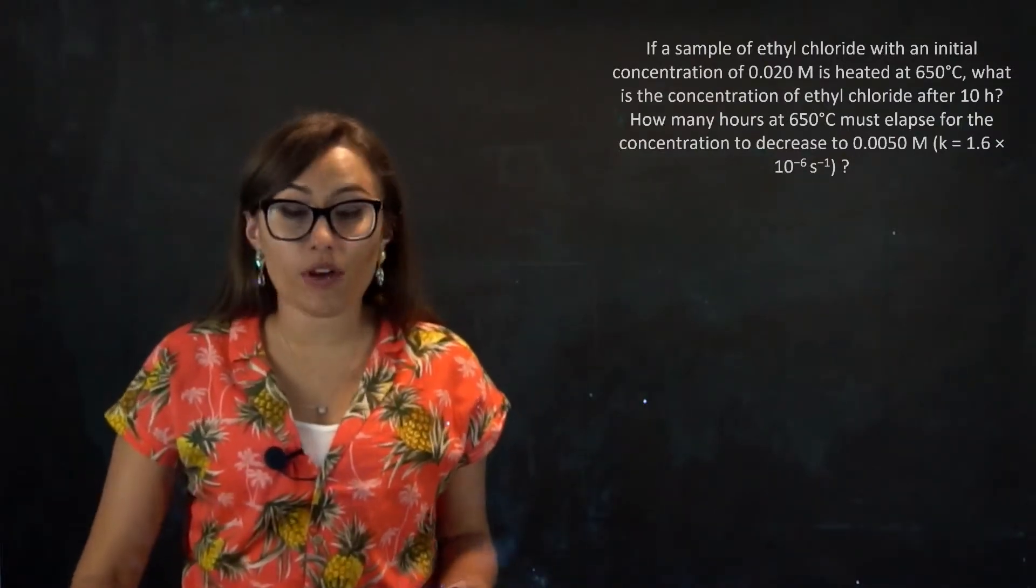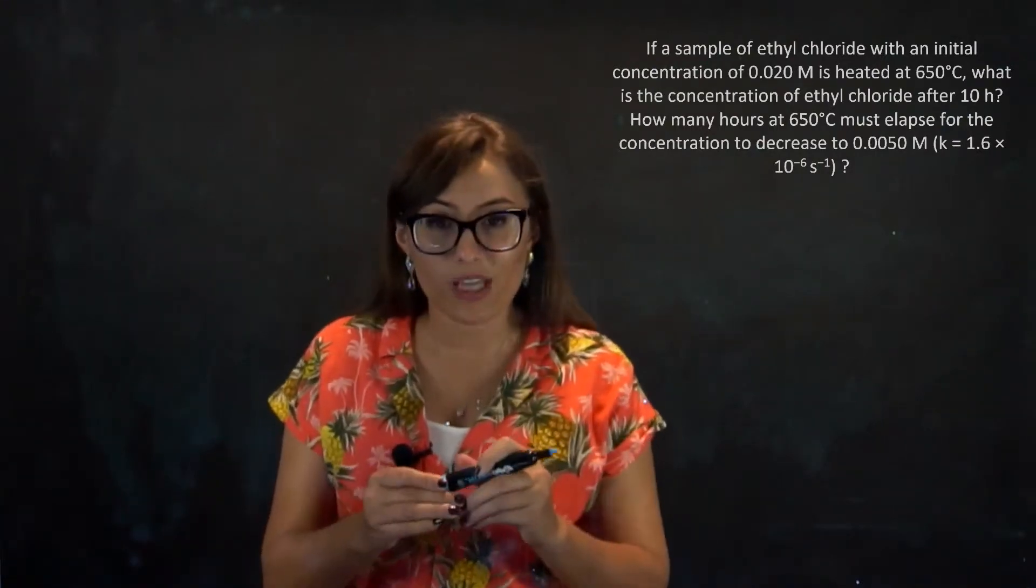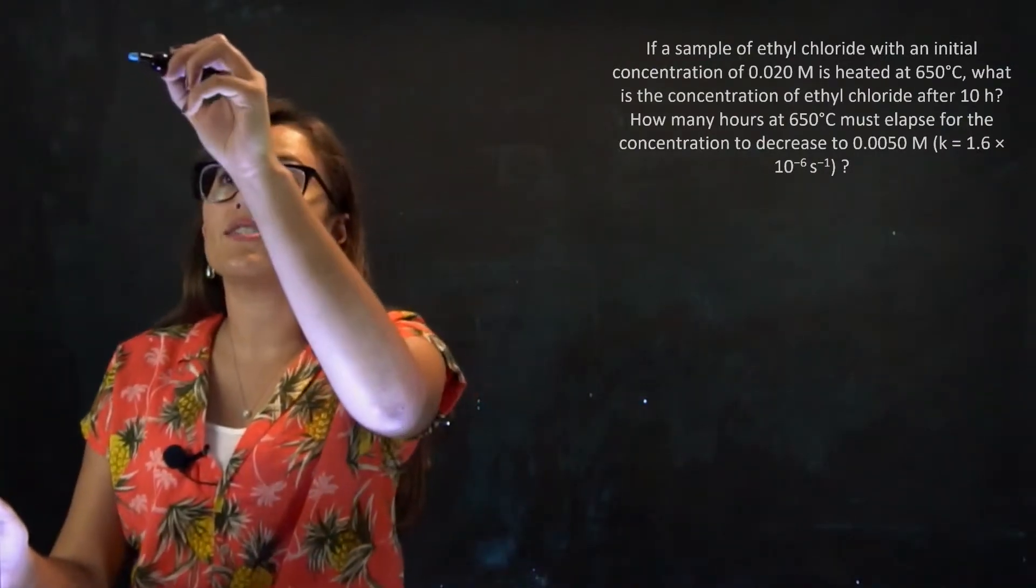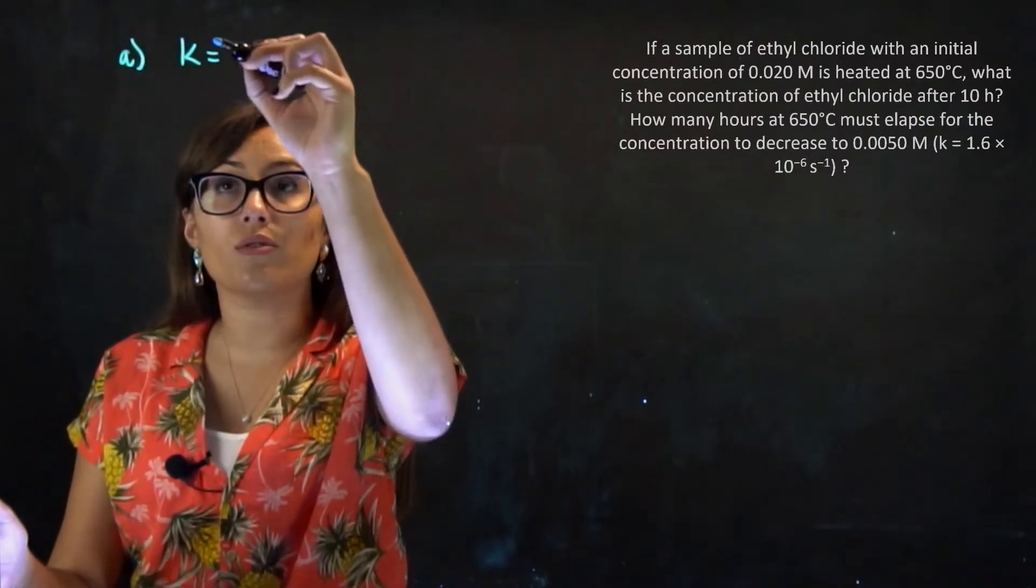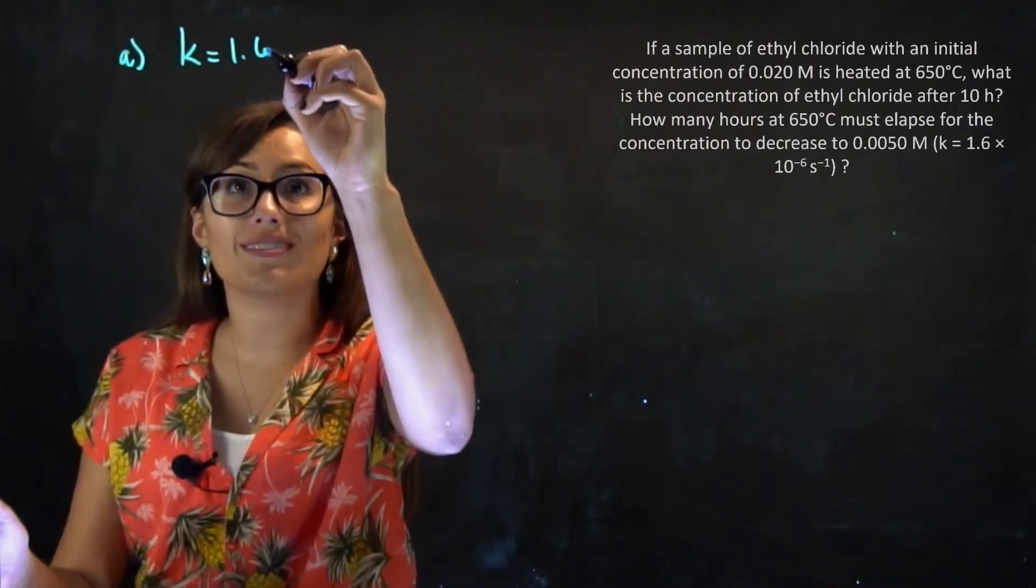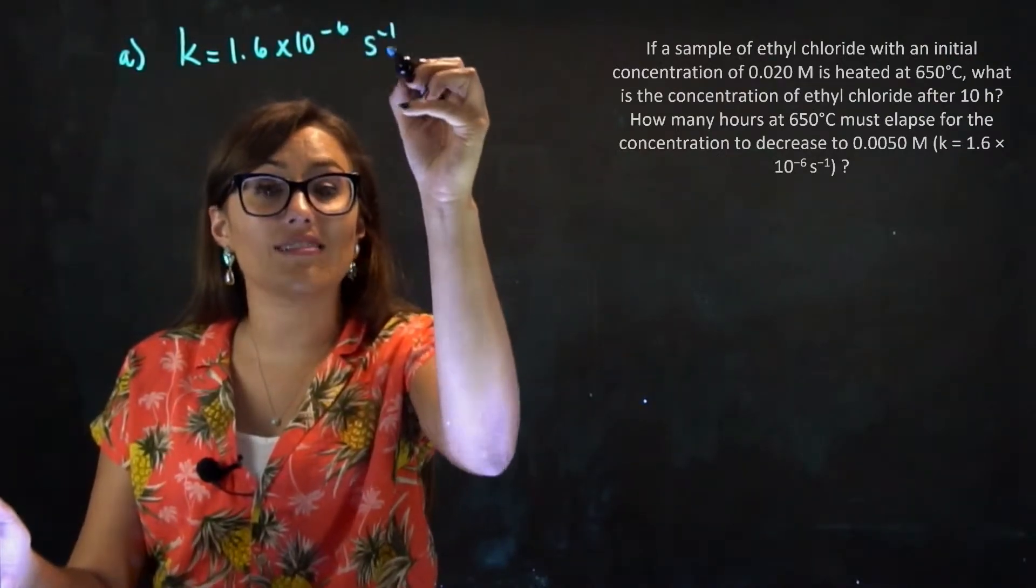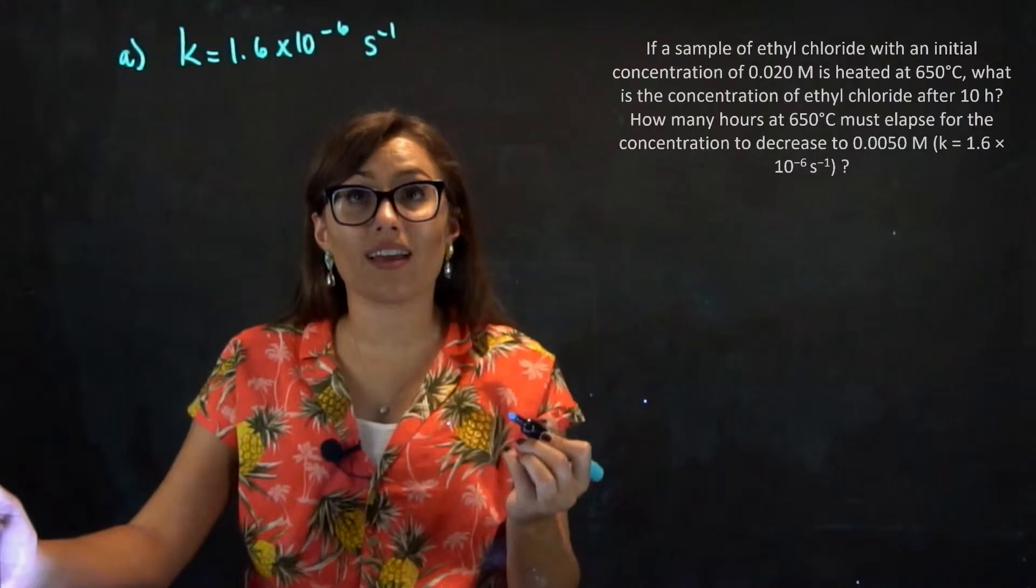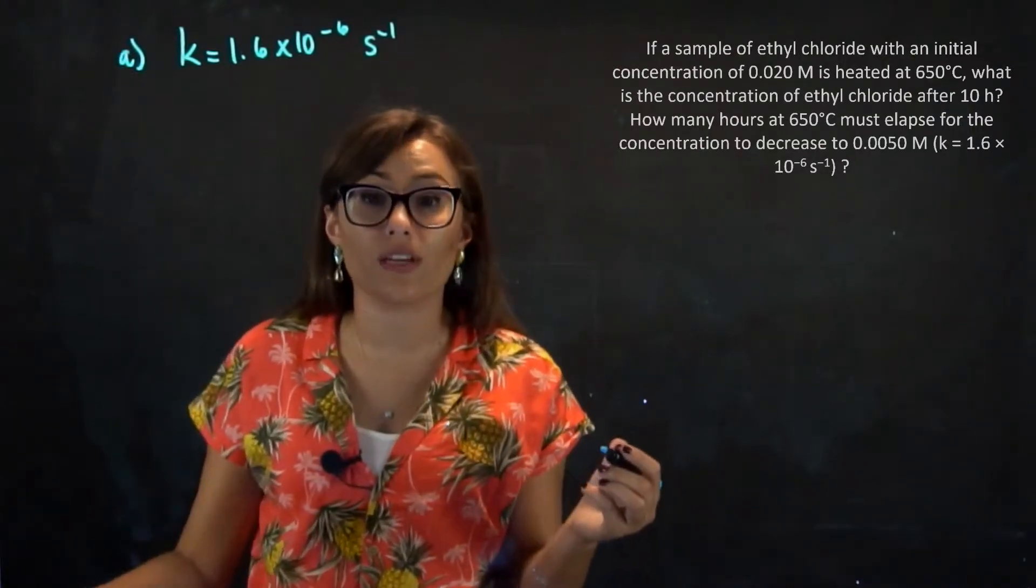So in this case, we're doing something very similar to the previous question, where we're using a first order reaction. And we know it's first order because, yet again, of the rate constant, where k is equal to 1.6 times 10 to the negative 6 per second. They're telling us that it is a first order reaction solely based off of the units.